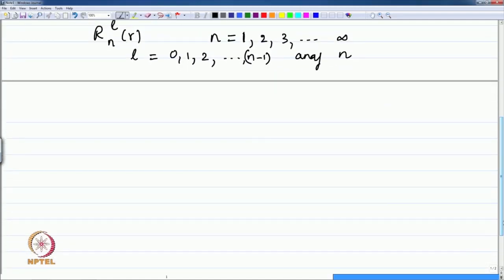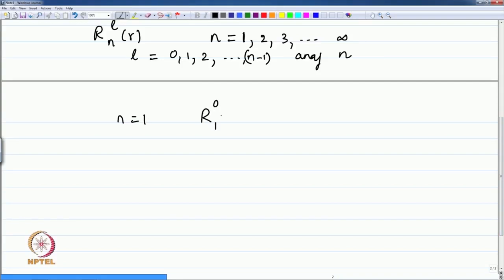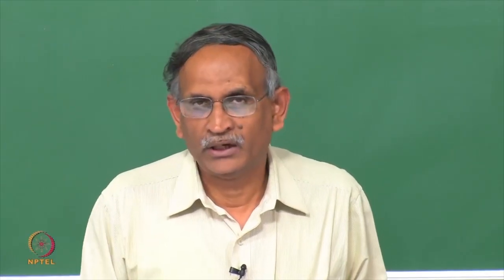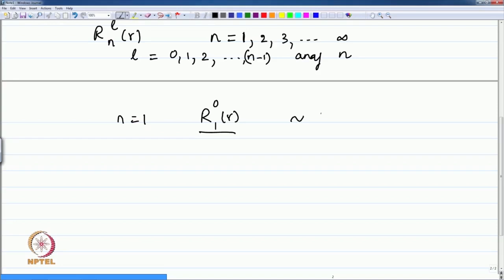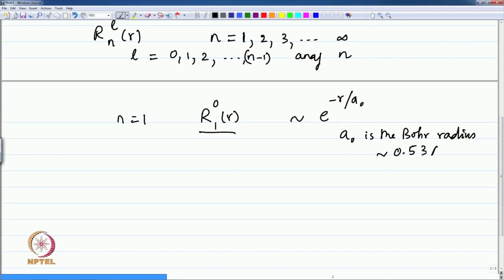When n is 1, we have the radial function R_10(r). The solution of the radial Schrödinger equation gives what are known as Laguerre polynomials times exponentials. This particular function R_10 is proportional to exp(−r/a₀), where a₀ is the Bohr radius, approximately 0.59 angstroms.